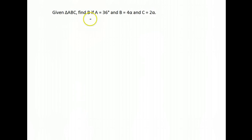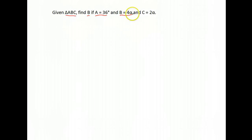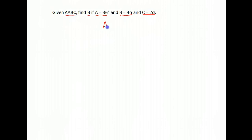Now the questions are going to get a little more complex, but you're going to use the same property. We still have triangle ABC and we're still asked to find angle B. This time A is 36 degrees, B is 4 alpha, and C is 2 alpha. It's not quite as straightforward, but we start the same way — the three angles in a triangle should sum to 180 degrees.